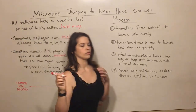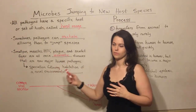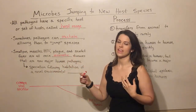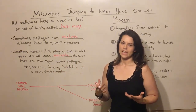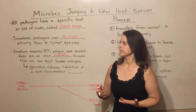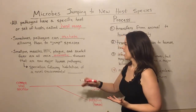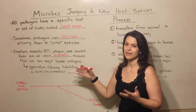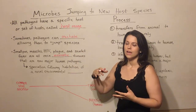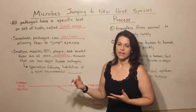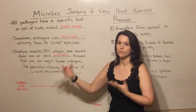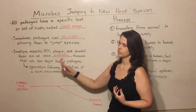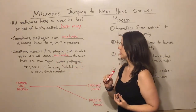Zoonotic — or zoonotic, sometimes you'll hear that pronunciation — just means that they infect animal species other than humans. All of these used to be zoonotic diseases, but at some point in human history they jumped over into the human species and now they're major human pathogens.